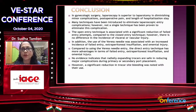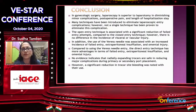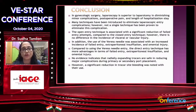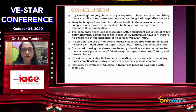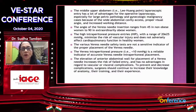To conclude: in gynecological surgery, laparoscopy is superior to laparotomy in diminishing minor complications, and you must be familiar with at least two to three techniques. The open technique is associated with a significant reduction of failed entry attempts compared to the closed entry, but there's no difference in the incidence of visceral or vascular injury. The Veress needle was associated with increased incidence of failed entry, extraperitoneal insufflation, and omental injury. The direct technique has more advantages over the Veress needle in terms of failed entry, extraperitoneal insufflation, and omental injury. No evidence indicates that radially expanding trocars reduce major complications, though significant reduction in trocar-site bleeding was noted. The Li Huang point has advantages for operative laparoscopy, especially for large pelvic pathology and gynecological malignancy, with proper visualization, angle, and working distance — 45 degrees for non-obese, 90 degrees for extremely obese patients.